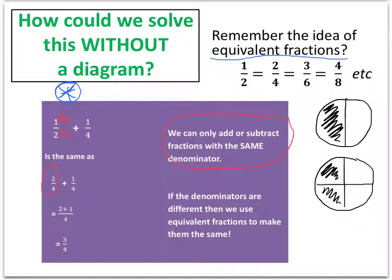Now that both of our fractions have the same denominator, it's a lot easier to add them together. Two quarters and another quarter make three quarters, which is the answer to our question, a half plus a quarter. So it's very important to remember that if the denominators are different, then we can use equivalent fractions to make them the same.